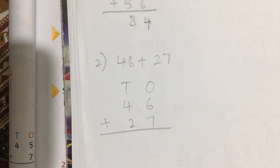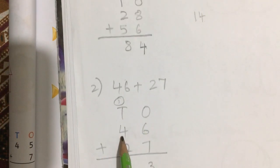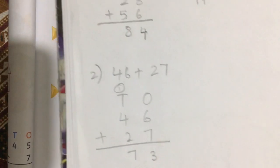6 plus 7 is equal to 13. Write 3 here and carry over 1. 4 plus 2 is 6, plus 1 is 7. So the answer is 73. Aap ne numbers ko 1s or 10s mein likhke arrange karna hai and then you have to add them.